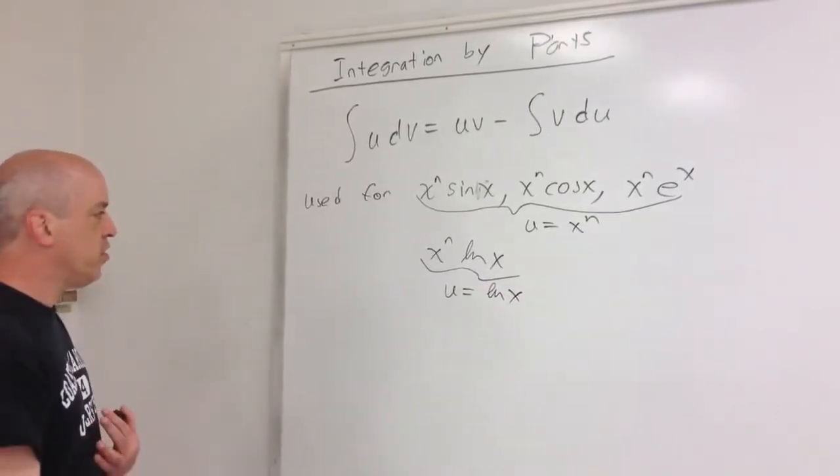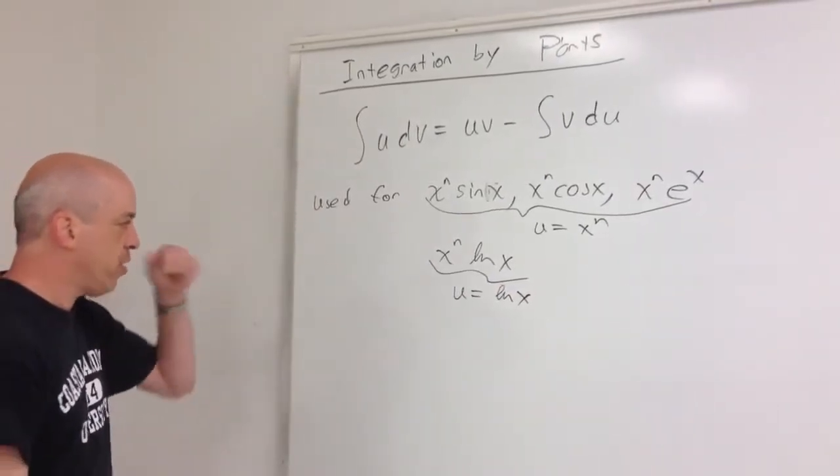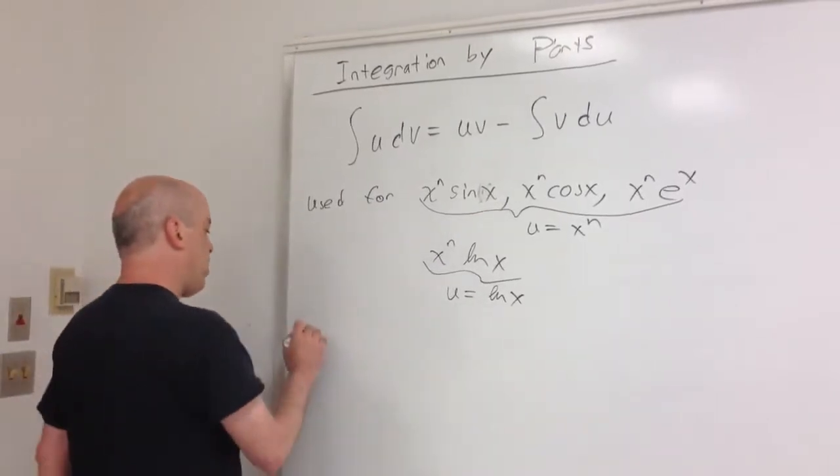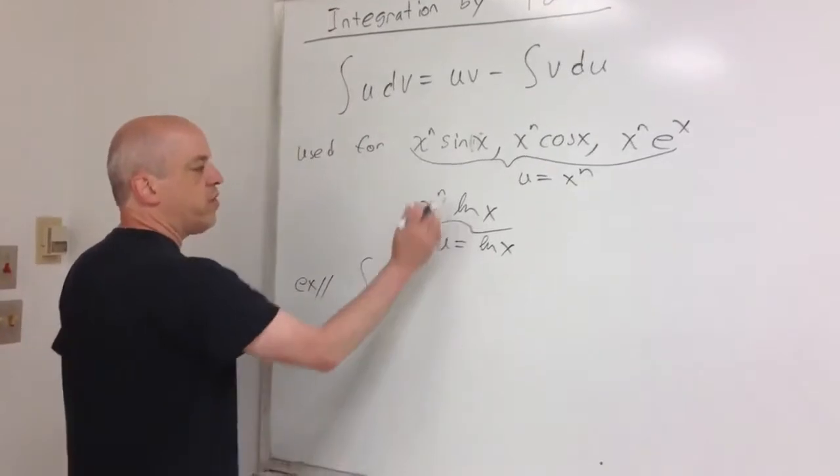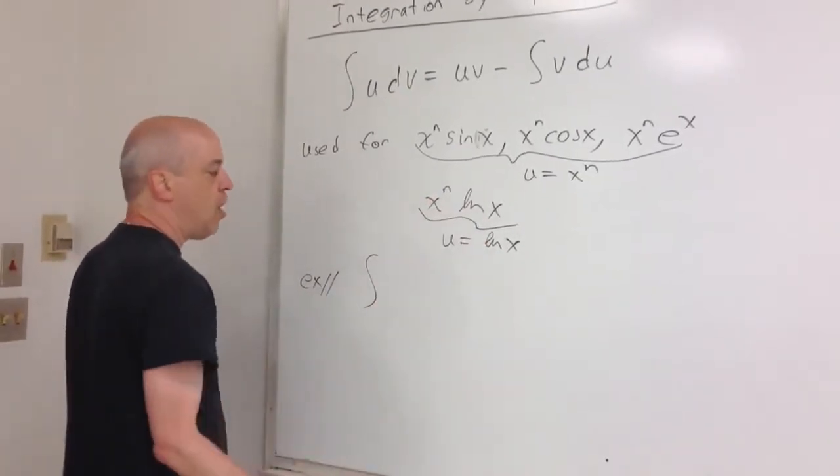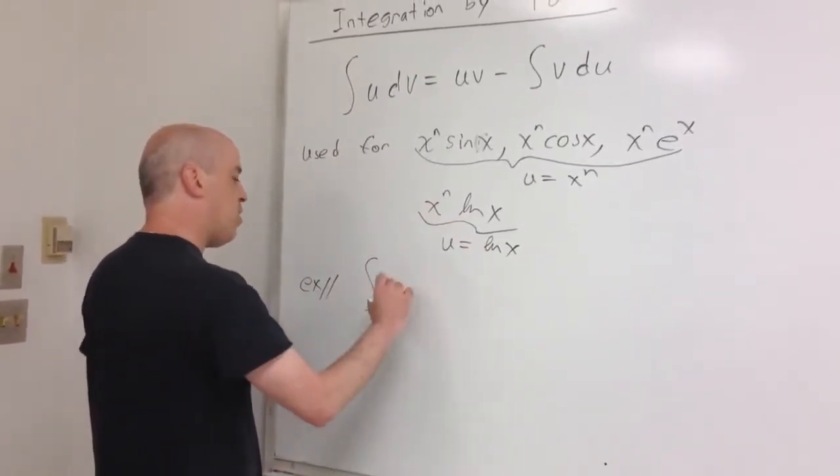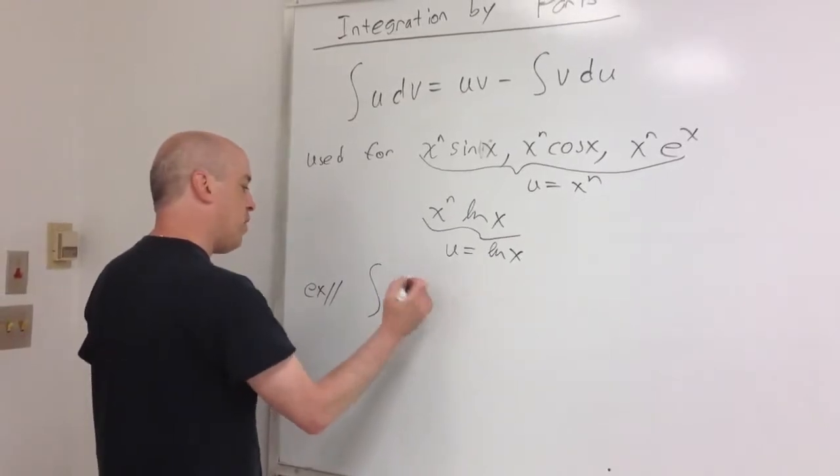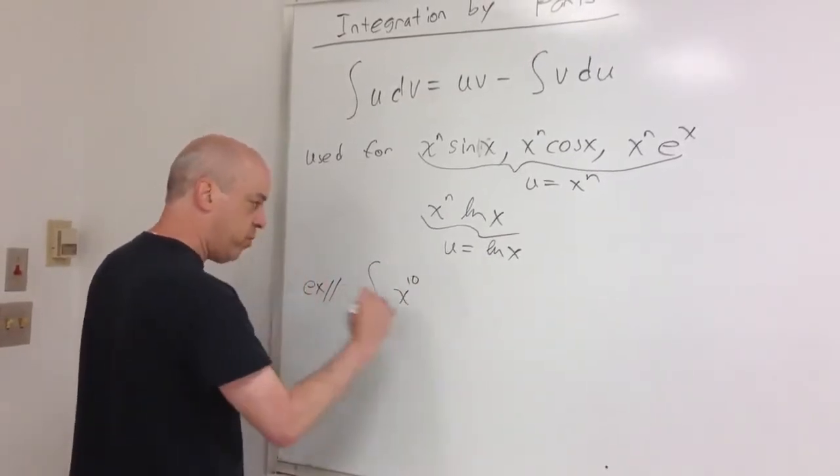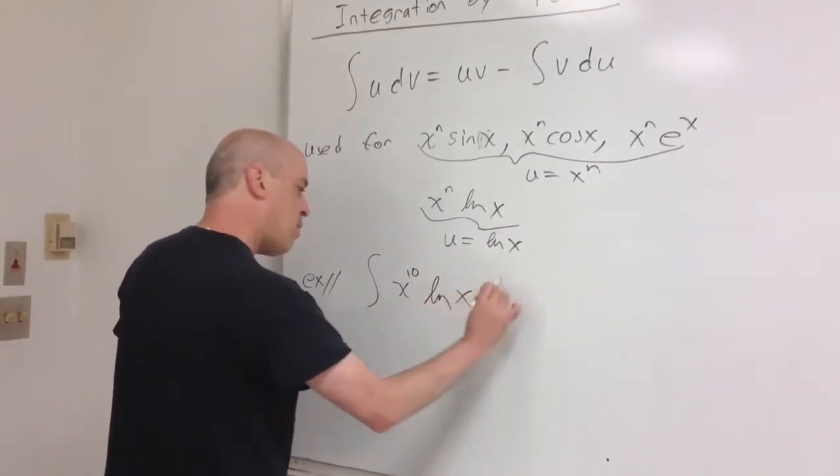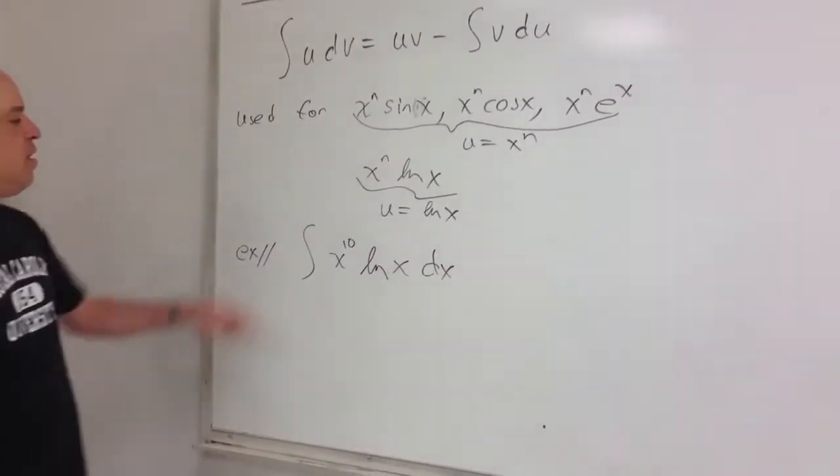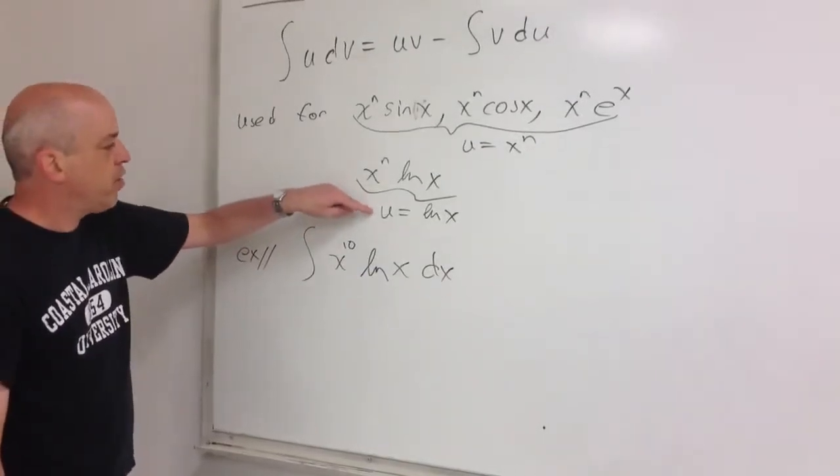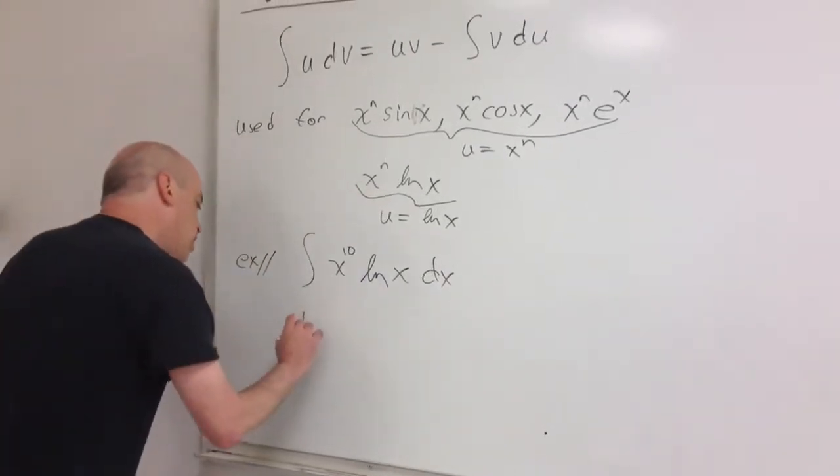I'd like to do a couple of examples to illustrate just this particular choice here. So the example I had in mind was integral of, say, x to a power times natural log. So let's just pick a power. It's not going to matter what power we pick. We'll make it big just to prove the point. And this should be solvable using integration by parts, letting u equal natural log of x. So let's go ahead and do that.